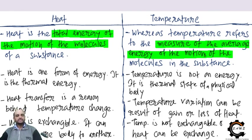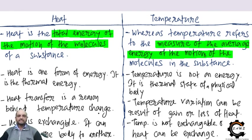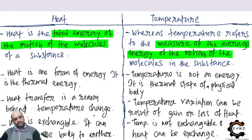The second difference: heat is one form of energy — it is thermal energy. Temperature is not energy; it is just a measurement of the physical state of the body. The third difference: heat transfers due to a temperature difference — only if there is a temperature difference will heat get transferred; otherwise there is no meaning in talking about heat.